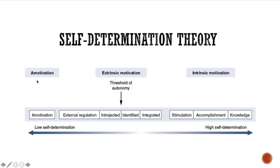At the amotivation end of the continuum, you are essentially indifferent — you don't care, you're going through the motions, and there's no motivation causing you to do something. Moving to the right, we hit extrinsic motivation, which involves all external types of rewards. Furthest to the left on the extrinsic side is external regulation, which includes material objects you can receive — typically money, a new car, trophies. Those are all externally regulated types of motivation.